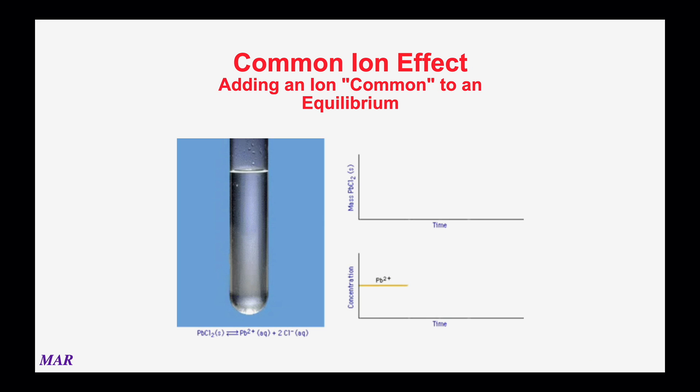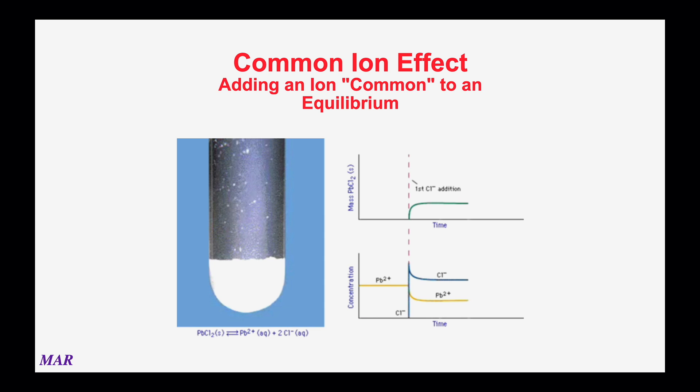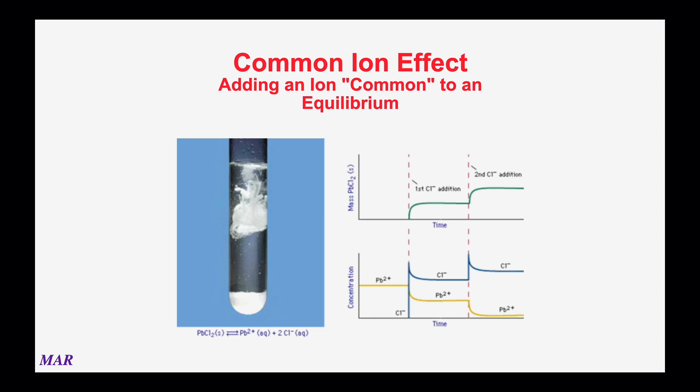In the test tube is a solution containing lead ions. To this, we add a solution containing chloride ions and lead chloride precipitates. Solid lead chloride is in equilibrium with lead ions and chloride ions in solution. At this point, we add more chloride ions in the form of a sodium chloride solution, which disturbs the equilibrium. More lead chloride precipitates, which removes still more lead ions from solution.